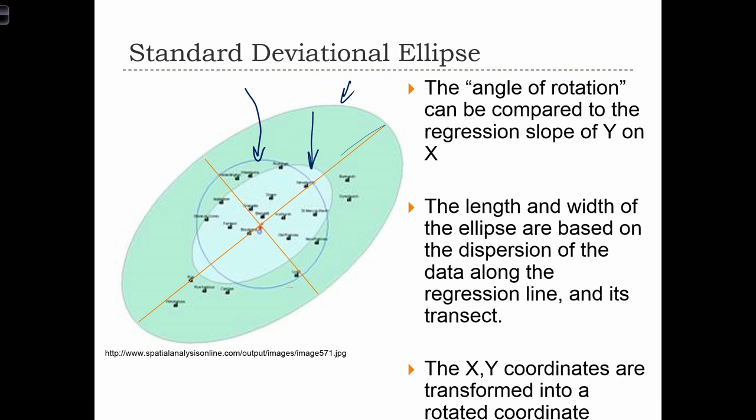And what the ellipse allows us to see very quickly is that the points seem to be more dispersed in the direction of this axis and less dispersed in its transect, in this axis over here. So the standard deviation ellipse gives us a better representative picture of the actual pattern of dispersion in our data set.